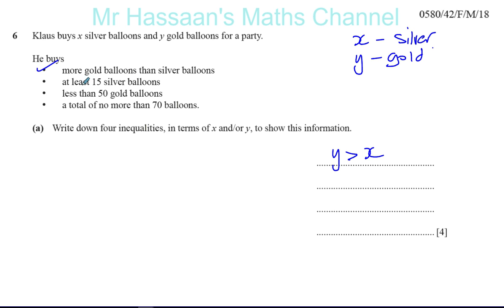Then it says at least 15 silver balloons. The number of silver balloons is X, and there must be at least 15 — meaning you can't have less than 15; there must be 15 or more. So X must be greater than or equal to 15.